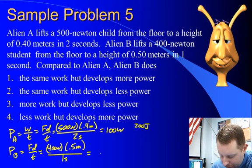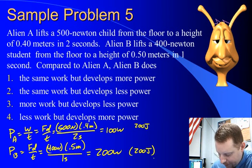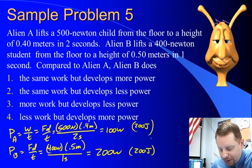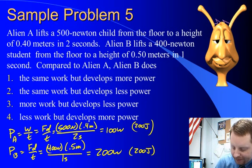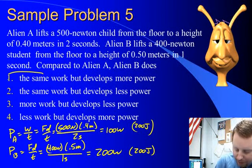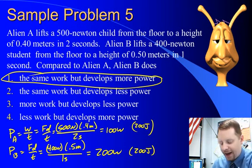So 200 joules over 1 second is going to be 200 watts, but again, it did 200 joules of work. So in this case, they did the same work, but Alien B develops more power.